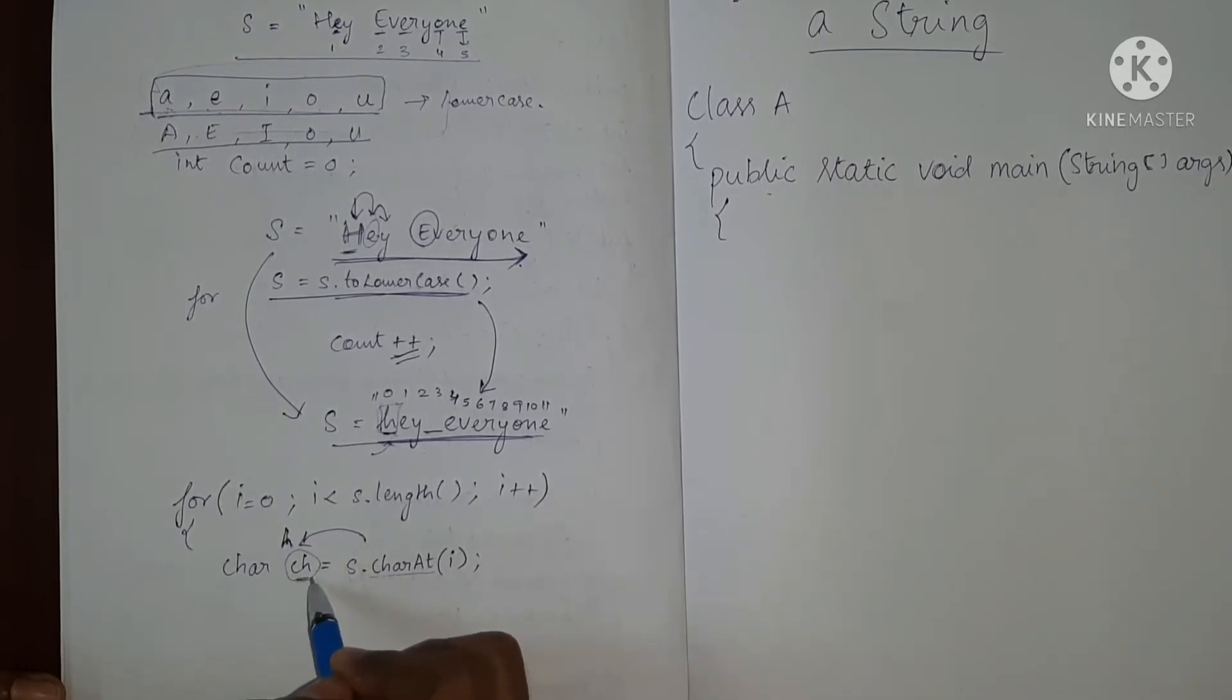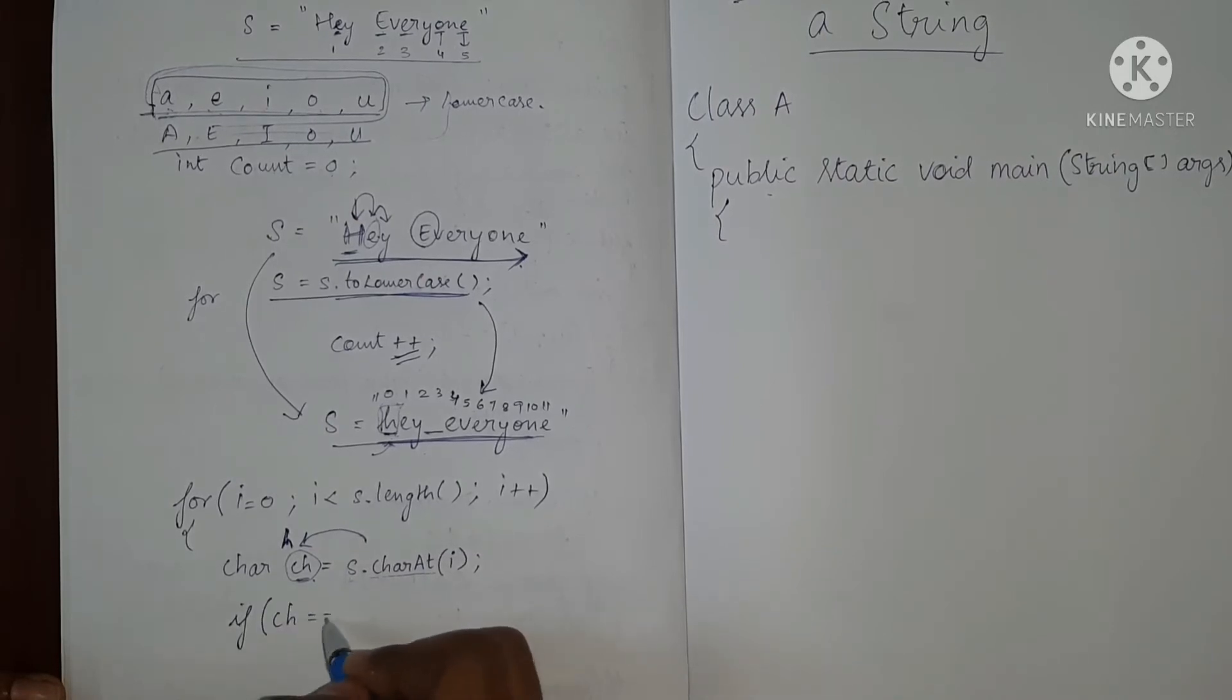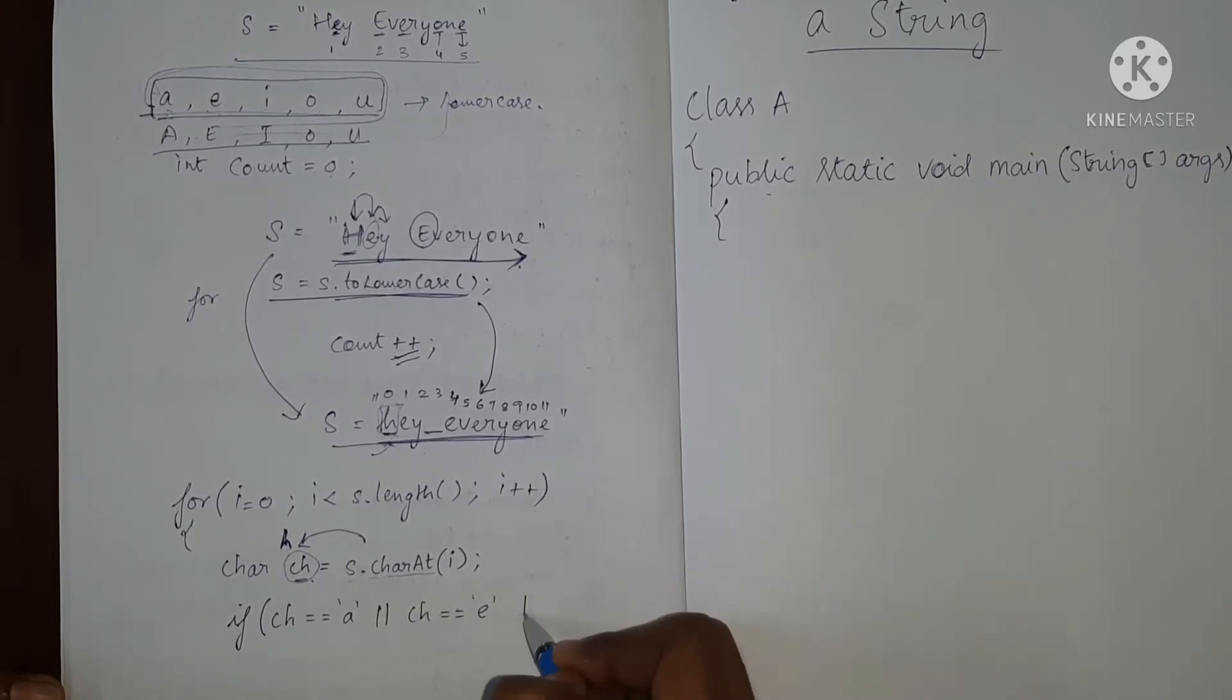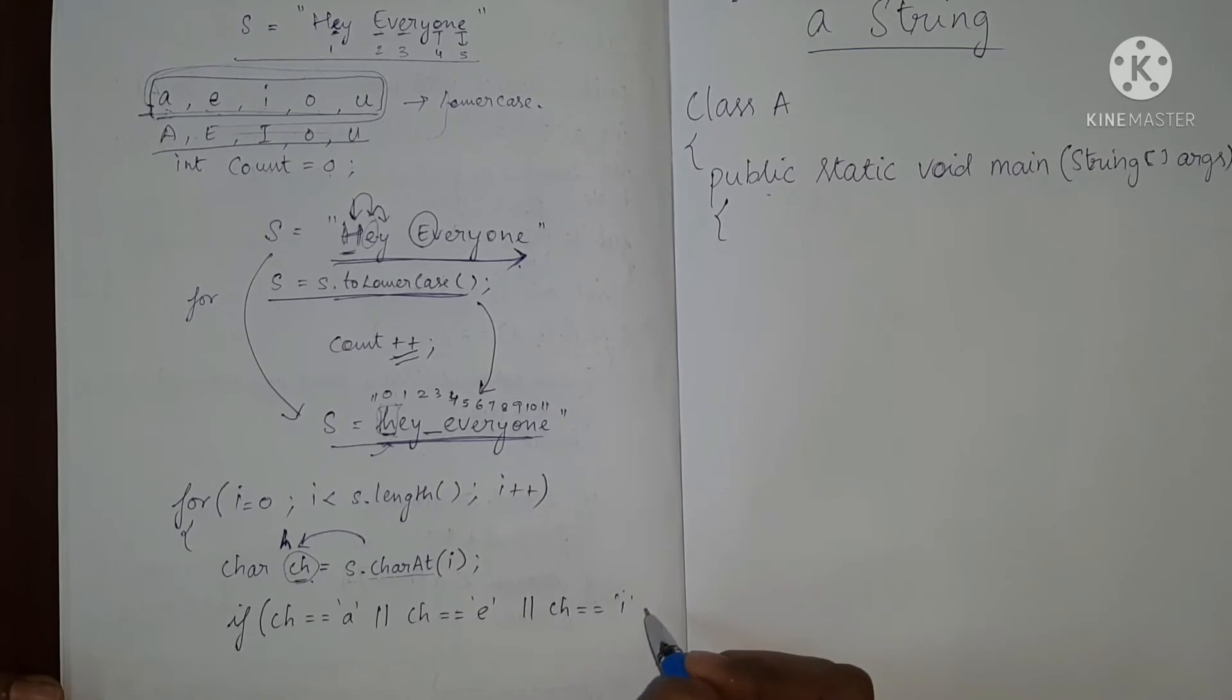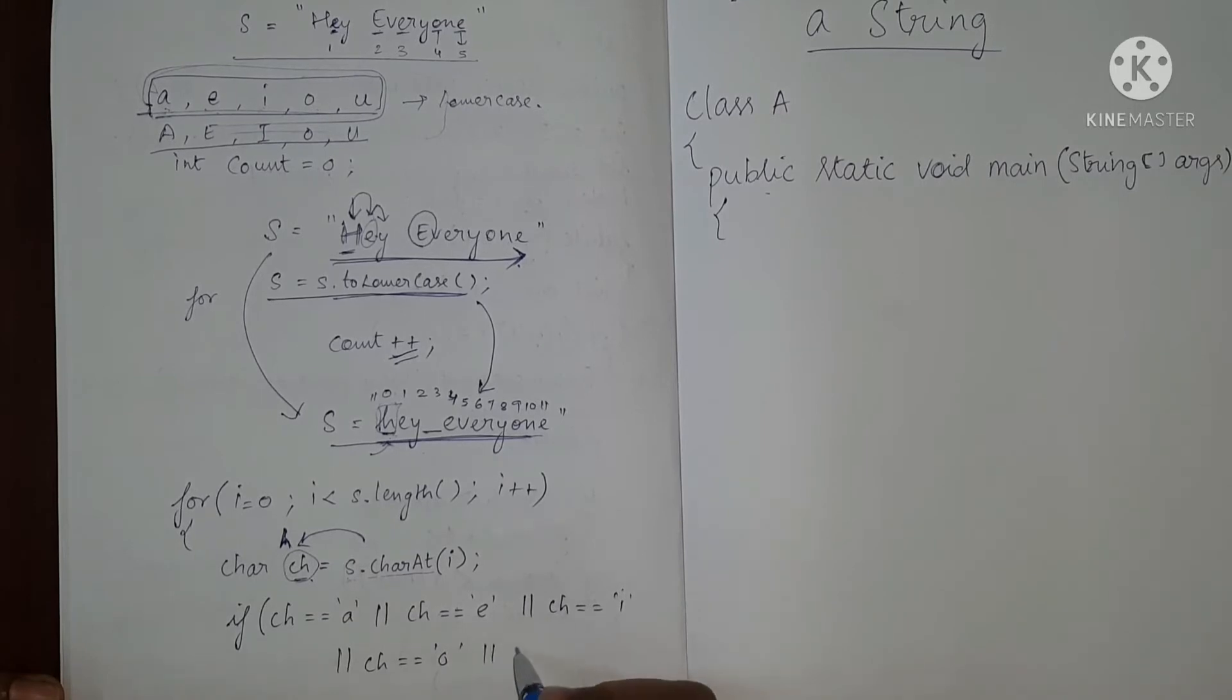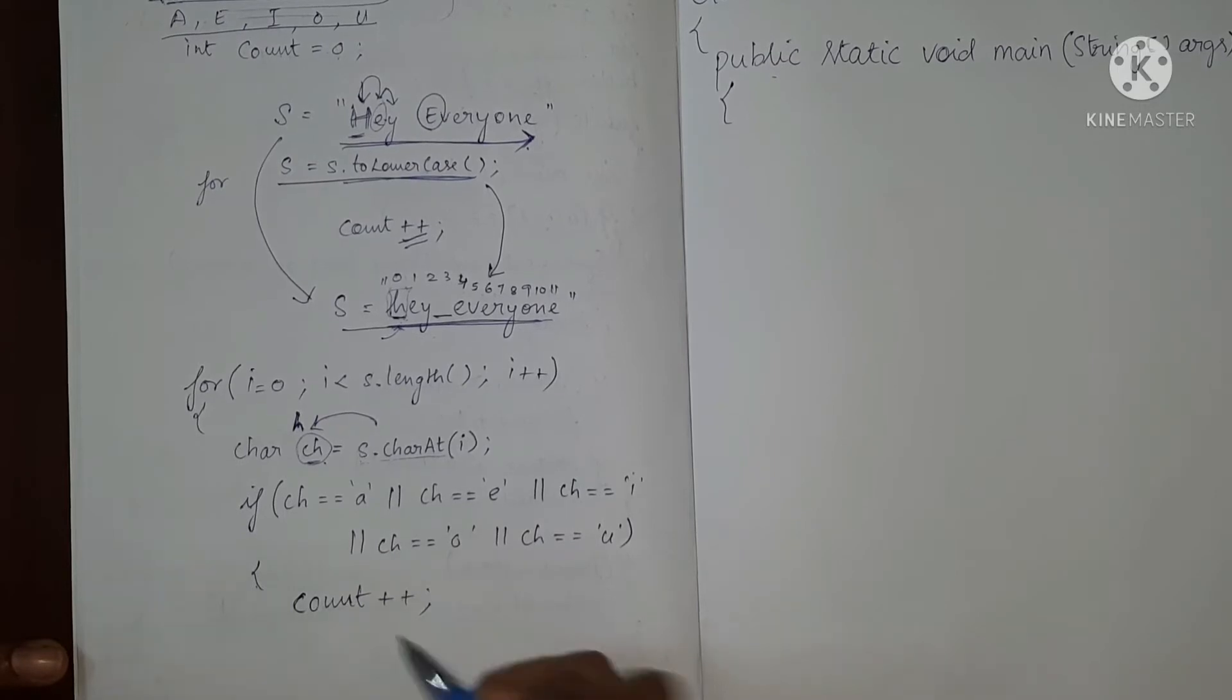So now we have to check if this CH is any of this A, E, I, O, U. So we will use if CH is equal equal A or if CH is equal equal small E or CH is equal equal small I or if CH is equal equal lower case O or U. If it is a match what we have to do? We have to increment the variable count.